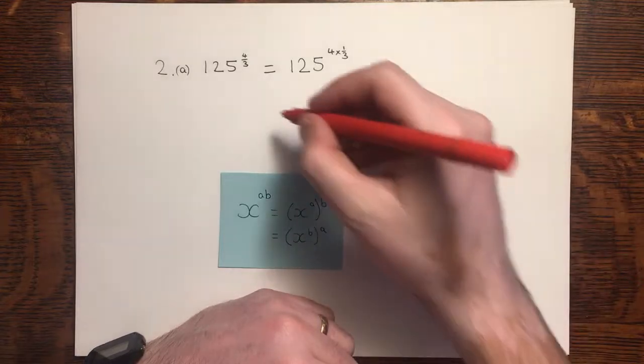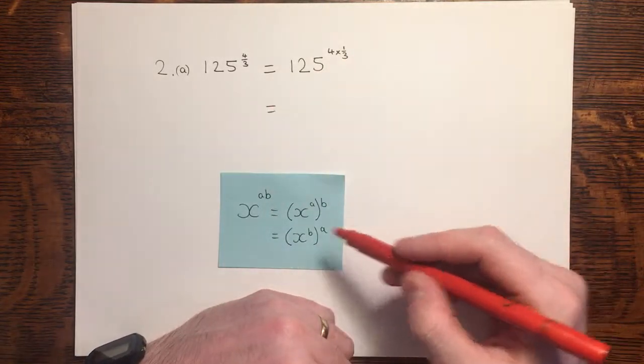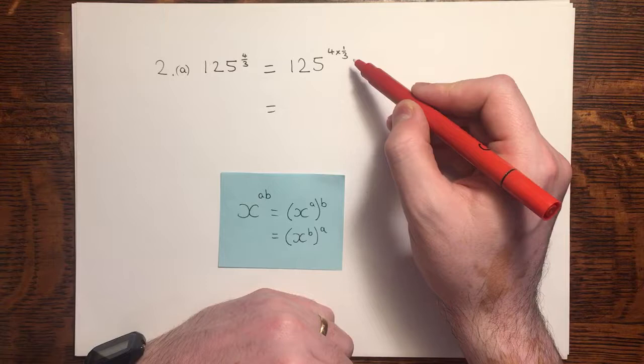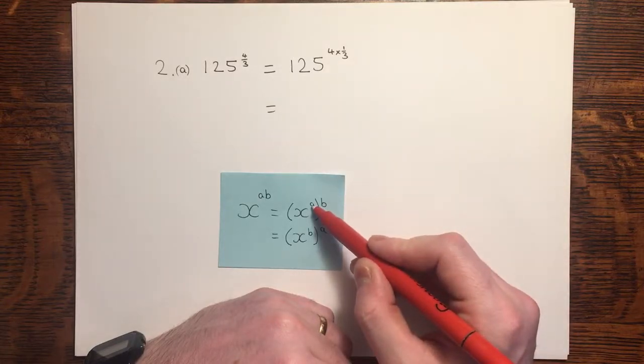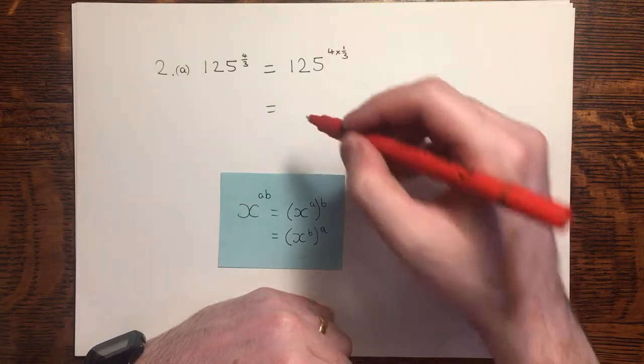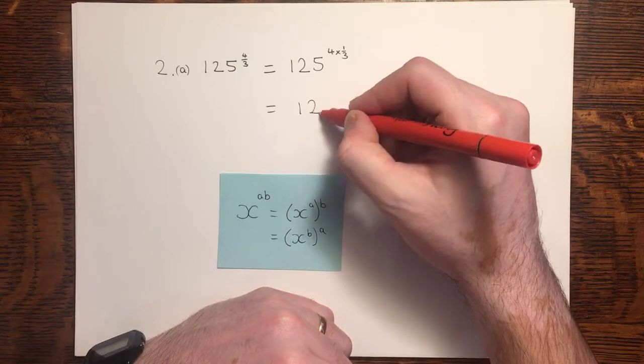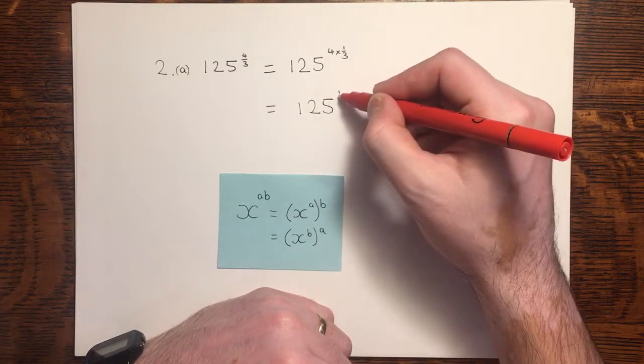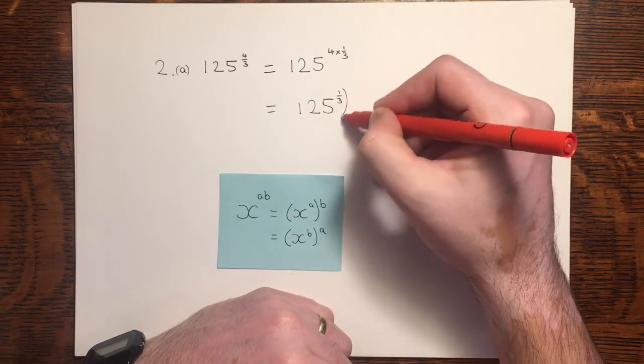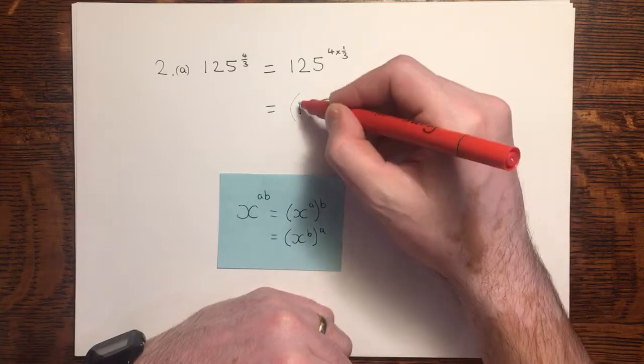If I then apply this rule, a times b, 4 times 1 third, and I can put either the 4 or the third inside the brackets, and the other one goes outside.